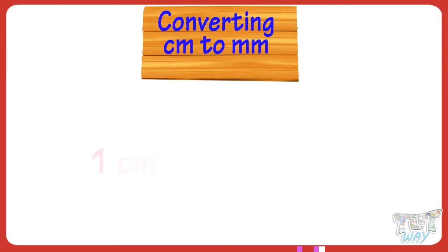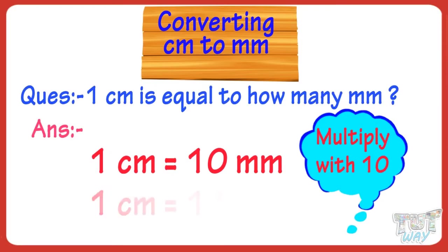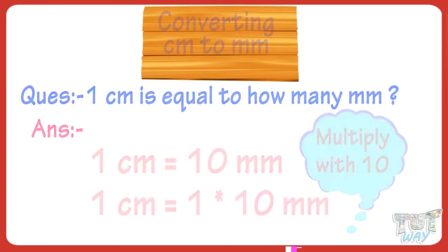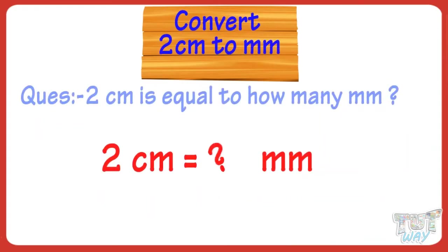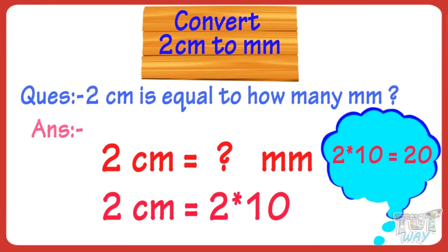1 centimeter equals 10 millimeters. So whenever you have to convert centimeters to millimeters, you will multiply them by 10. Let's convert 2 centimeters to millimeters: multiply 2 with 10. 2 multiplied by 10 equals 20. So 2 centimeters equals 20 millimeters.